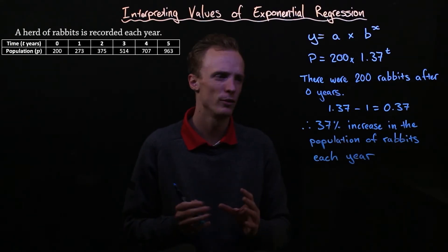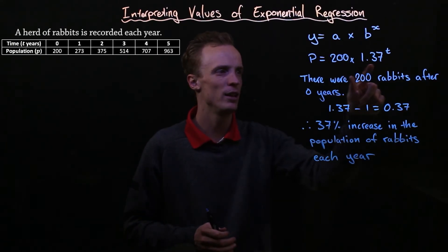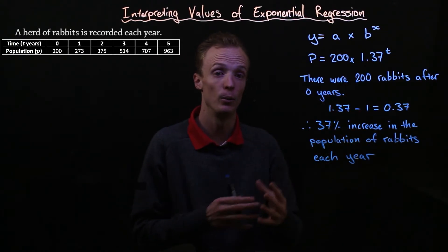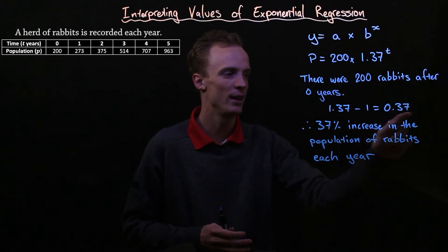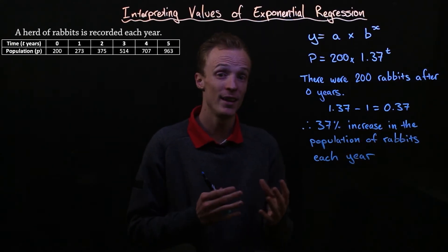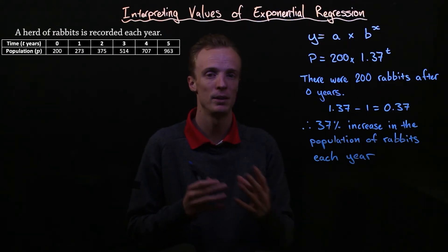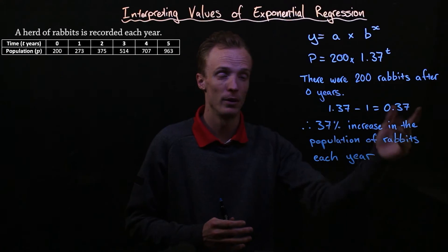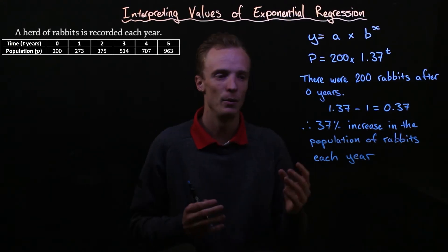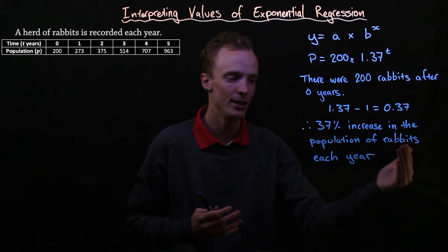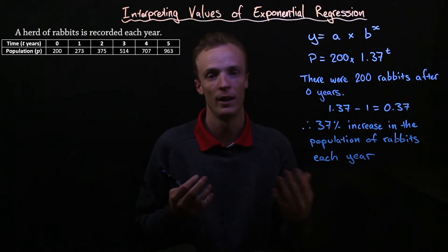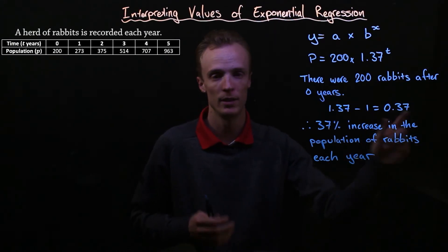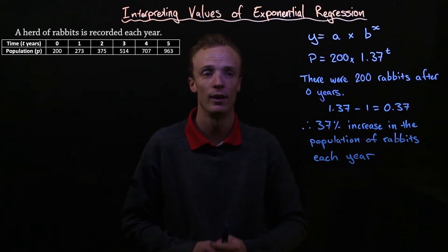Now let's think about if this value was less than 1. When we subtract 1 from a value less than 1 we'd end up with a negative value, which indicates a percentage decrease instead. So if this was negative 0.37 for example, it would indicate a 37% decrease in the population of rabbits each year. But that didn't occur here — this ended up as a positive value so it was a percentage increase.